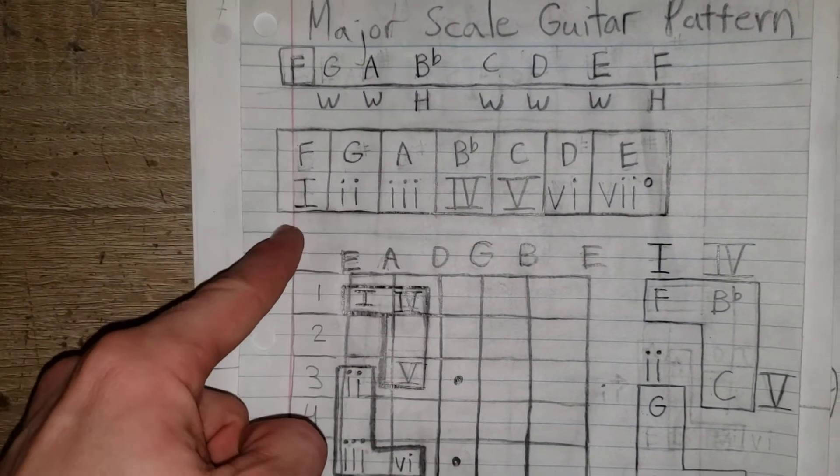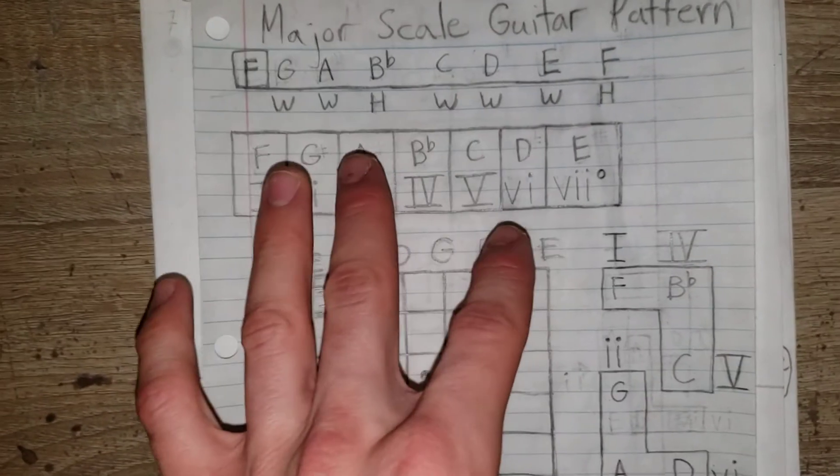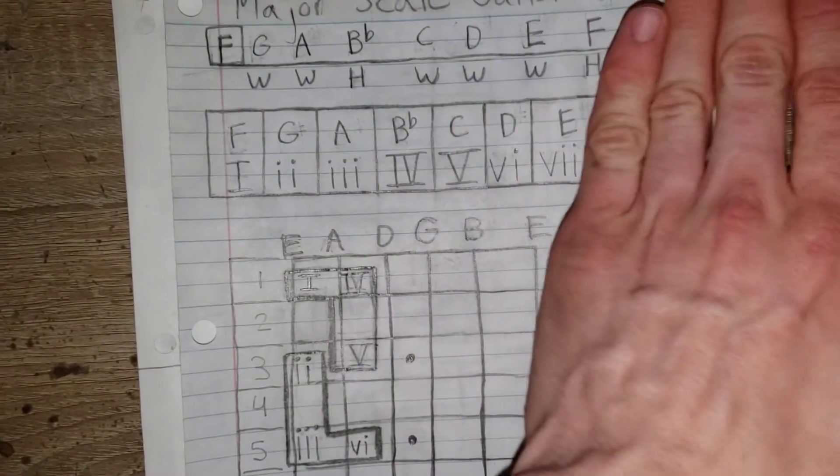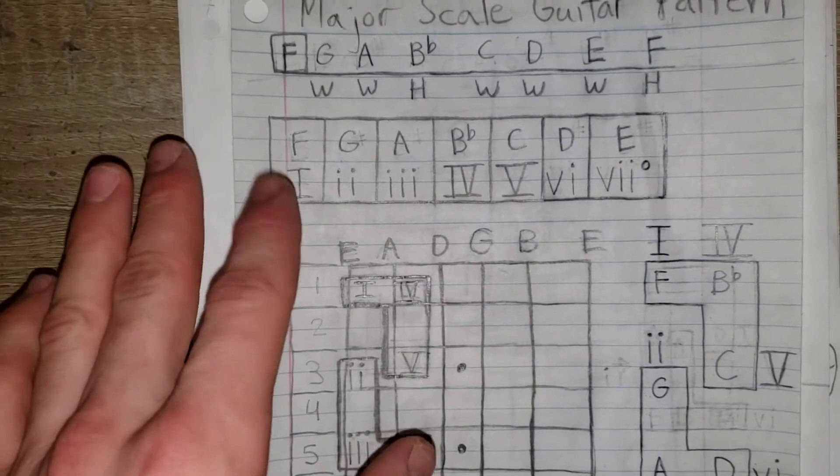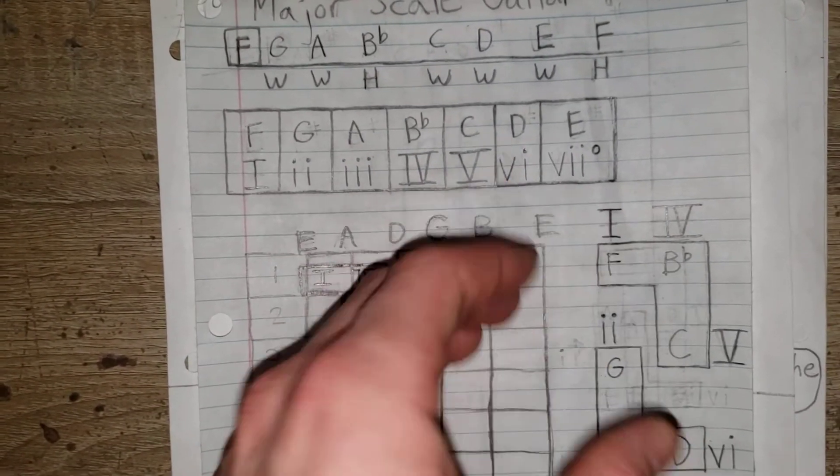And then we did our Roman numerals. So we did our 1, 2, 3, 4, 5, and 6. We're going to forget about the 7 for now. Our 1, 4, and 5 being major, and our 2, 3, and 6 being minor.